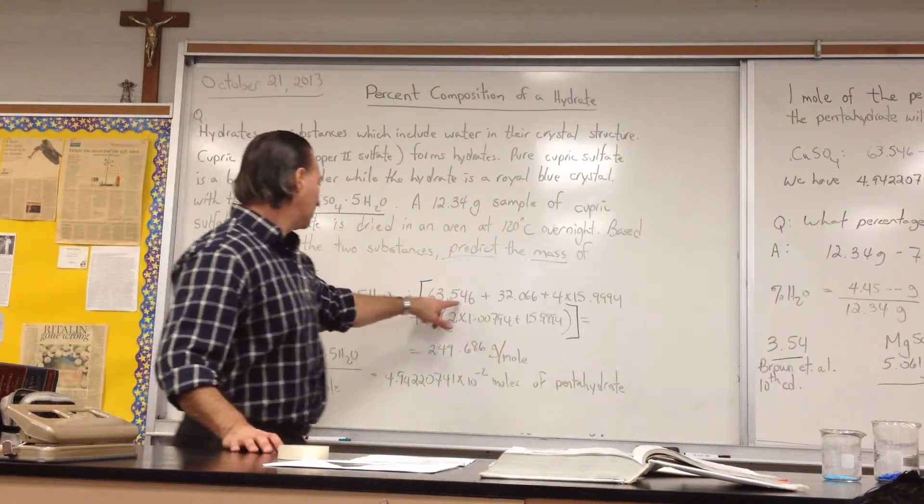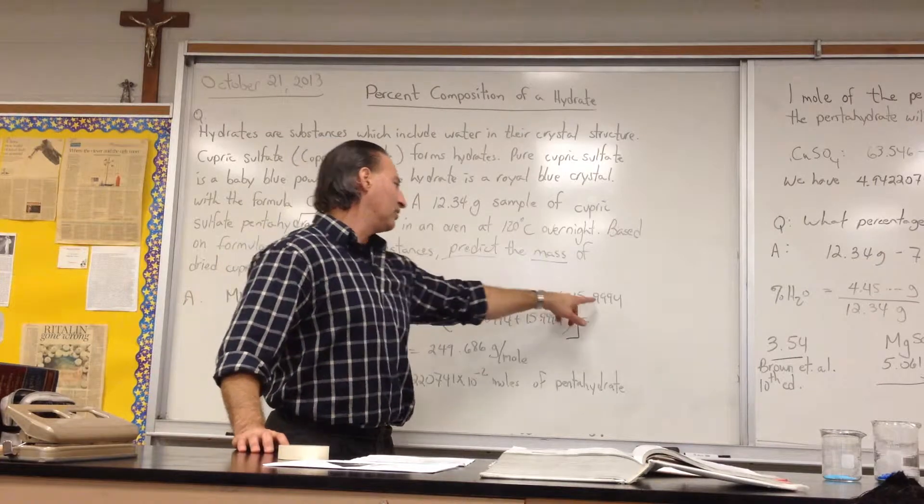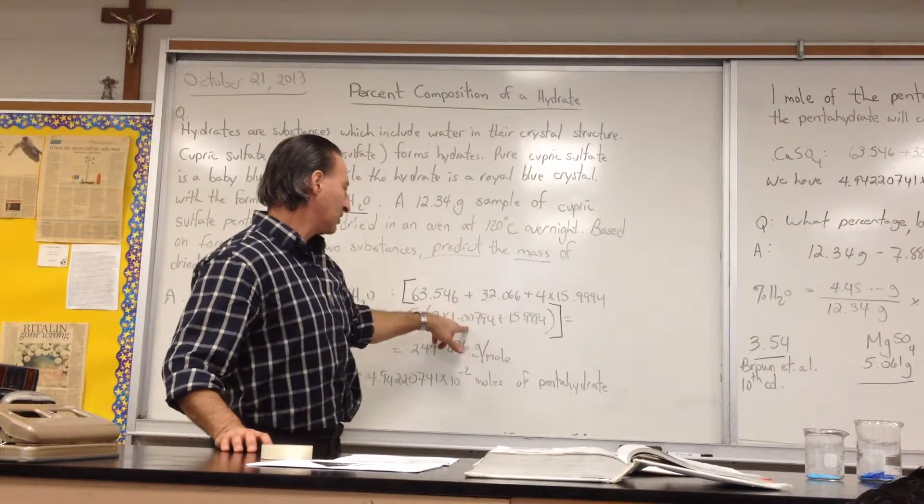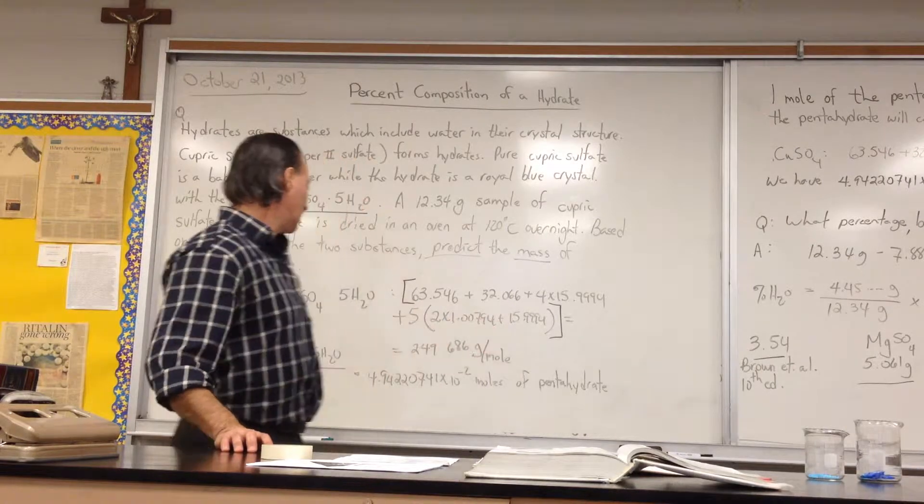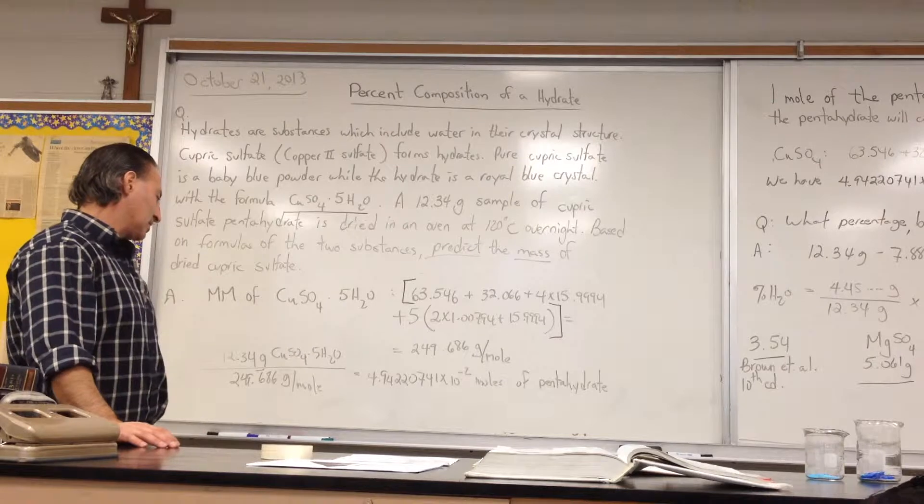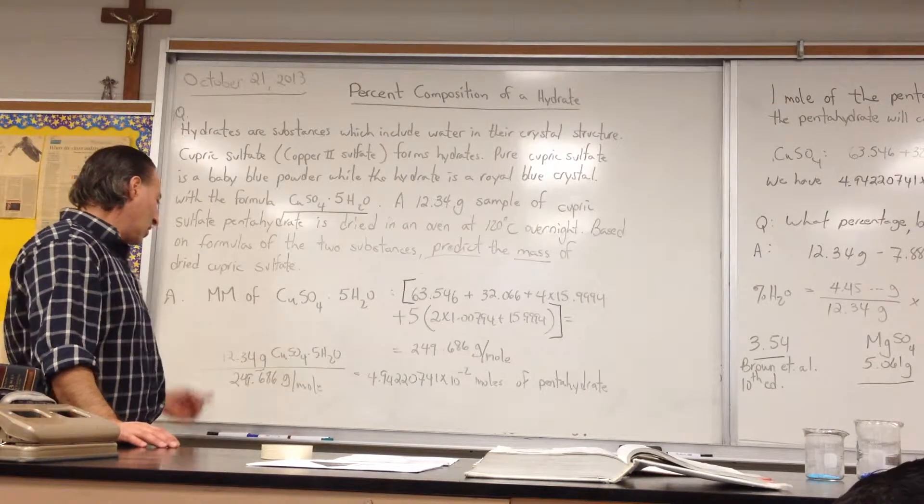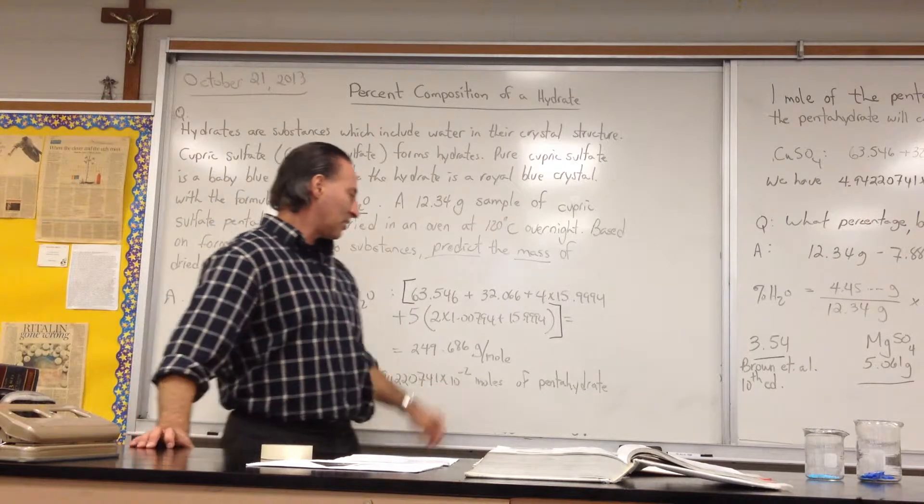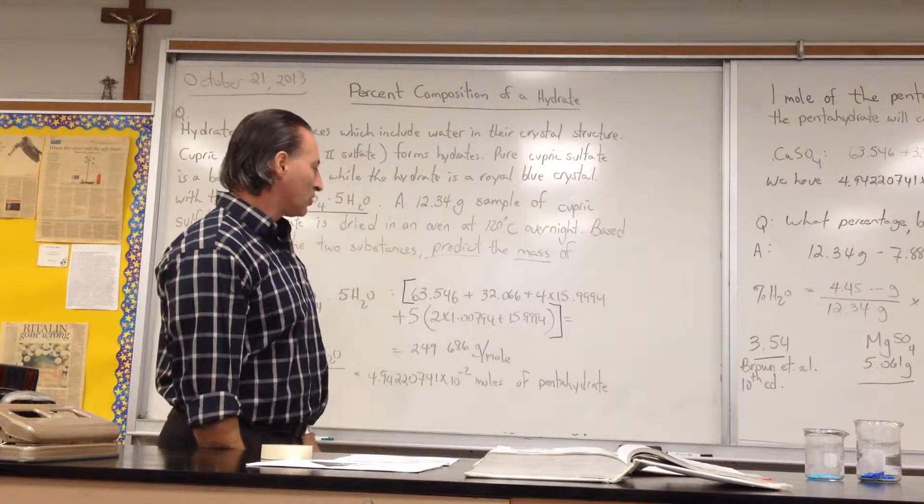So the molar mass of copper, sulfur, we get 4 times the oxygen, plus the water, let's include it, 5 times the molar mass of water. Total molar mass of cupric sulfate pentahydrate is 249.686 grams per mole. We have 12.34 grams of it. So that equals 4.94 times 10 to the minus 2 moles of the hydrate.